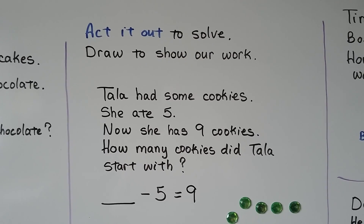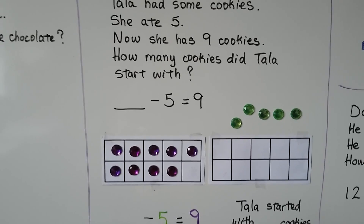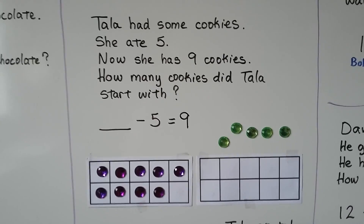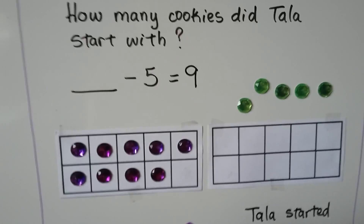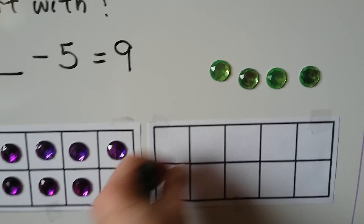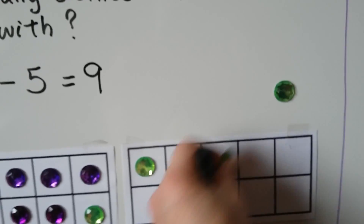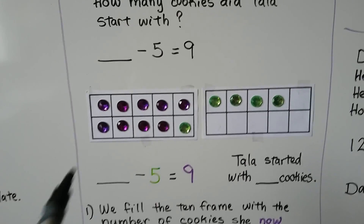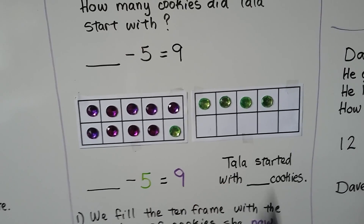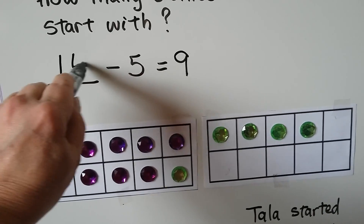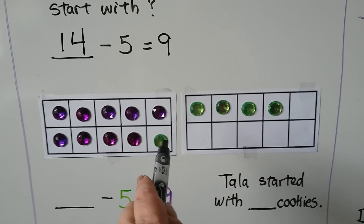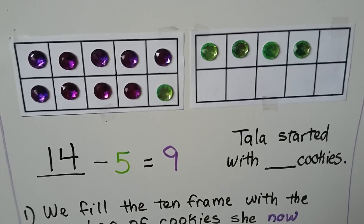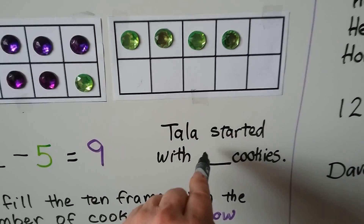And how will we use this information? We can make 10 frames to help us act it out. We know that she ate 5 and she has 9 left over. Here are the 9 she has left. We can put the 5 that she ate: 1, 2, 3, 4, 5. And we can figure out how many she started with: 10, 11, 12, 13, 14. If we have 14 and we take these 5 away, we will have 9 left. 14 minus 5 is equal to 9. So Tala started with 14 cookies.